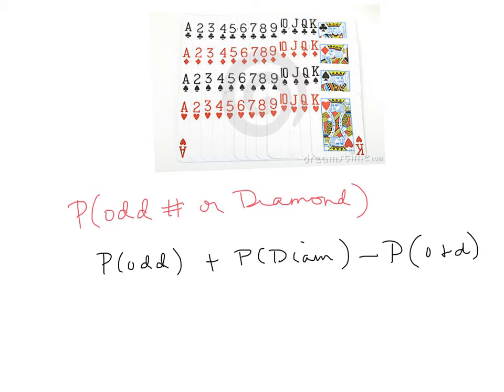An ace is not the number one. So my odd cards are three, five, seven, and nine. I only have four in each suit. So four in each gives me 16 total odd cards out of 52 cards. That's my probability of selecting an odd card.